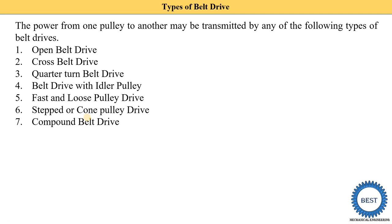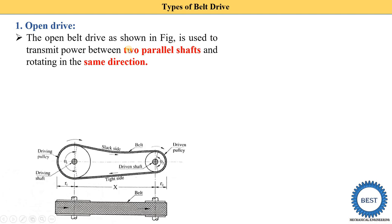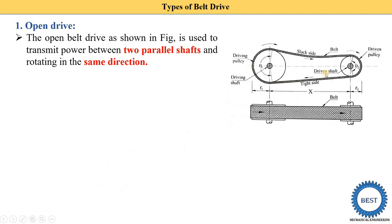Now we understand all these types in detail. First is the open belt drive, as shown in the figure. Here you see the driving shaft on which the driving pulley is installed, the driven shaft on which the driven pulley is installed, and these two pulleys are connected by the belt. It is called the open belt drive. This is the top view of the open belt drive.